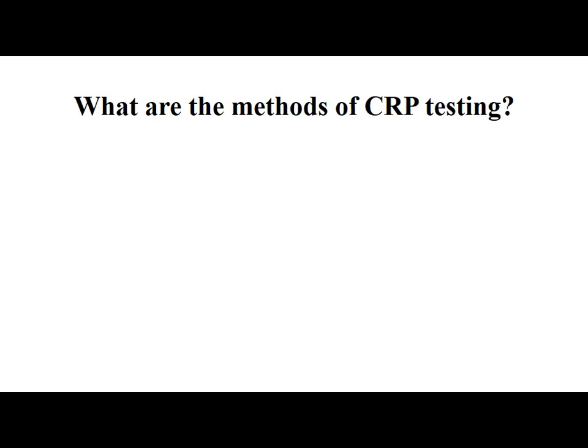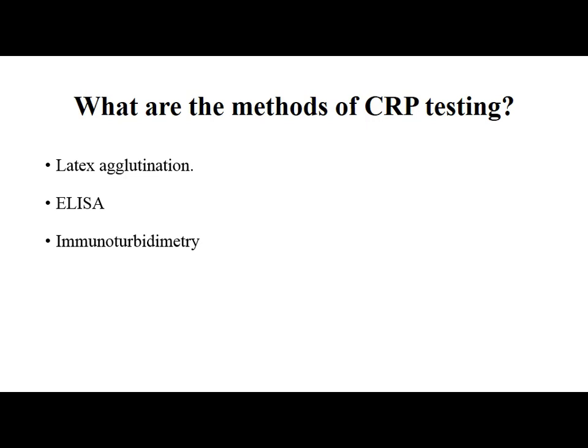The most widely used method is the latex agglutination test, but it lacks sensitivity and gives variation from lab to lab. Hence, it has been replaced by ELISA, immunoturbidimetry, nephelometry, and immunodiffusion.